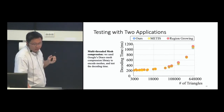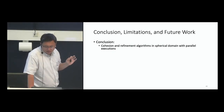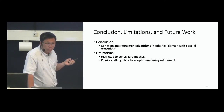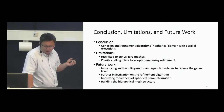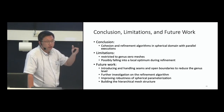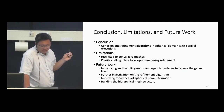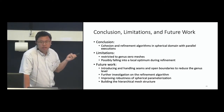In conclusion, we present two algorithms operating in the spherical domain. The limitation is restriction to genus-zero meshes — they must be homeomorphic to a sphere. There may also be failing cases due to local optima during refinement. Future work includes handling seams and open boundaries to reduce genus level — genus two requires two cuts, genus one requires one cut. We also want to further investigate the refinement algorithm, improve spherical parameterization robustness, and explore building hierarchical mesh structures.